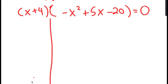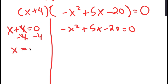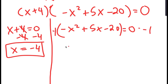This gives two equations: x plus 4 equals 0, and negative x squared plus 5x minus 20 equals 0. For x plus 4 equals 0, subtracting 4 on both sides gives x equals negative 4. For negative x squared plus 5x minus 20 equals 0, I'll multiply both sides by negative 1 to get x squared minus 5x plus 20 equals 0.